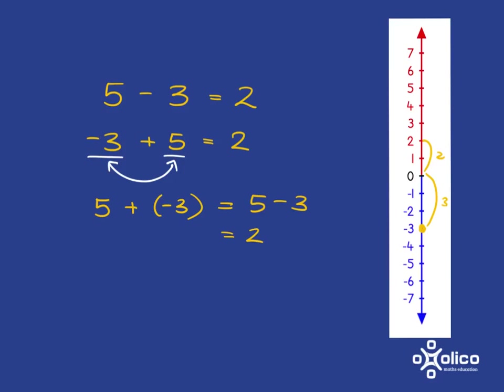And so now if we had to do something like, say for example, negative 11 plus 32, we can very easily just rewrite that as 32 subtract 11 and we get our answer of 21.